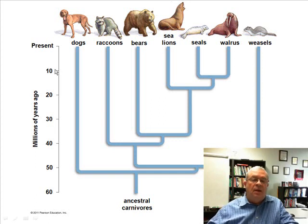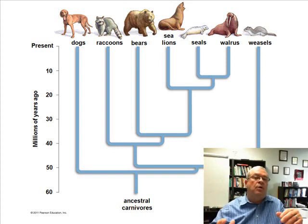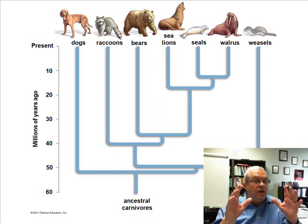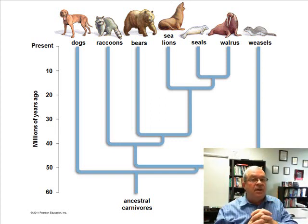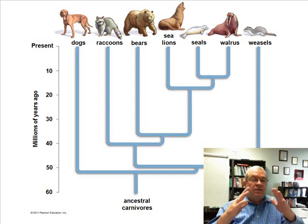We know what family trees are about. Some of you may have a relative who's put together a family tree showing you, your parents, grandparents, and cousins going back several generations. Who's most closely related on those family trees? Those with whom you share the most recent common ancestor. For example, you and your full siblings — you share a common ancestor, which is your parents. The tree doesn't go back very far before it comes together with you and your parents.